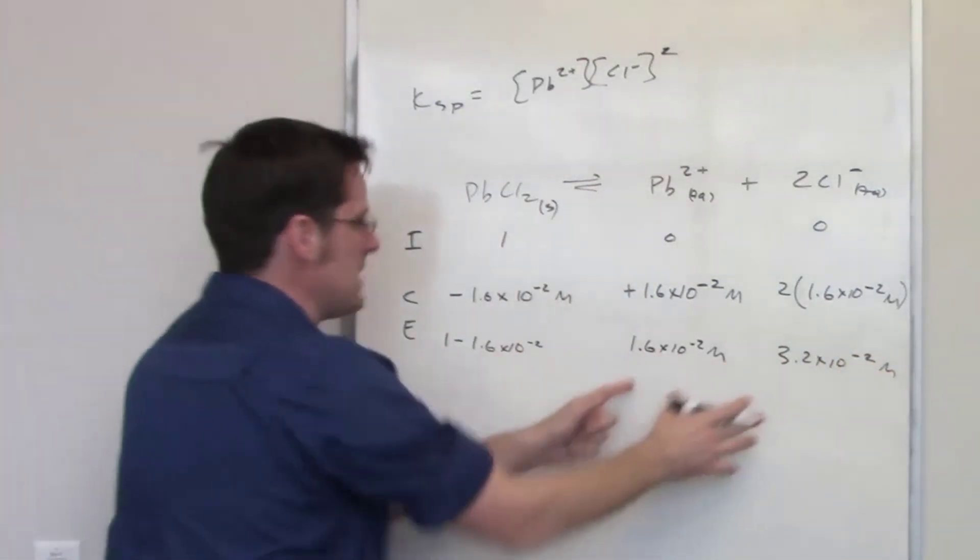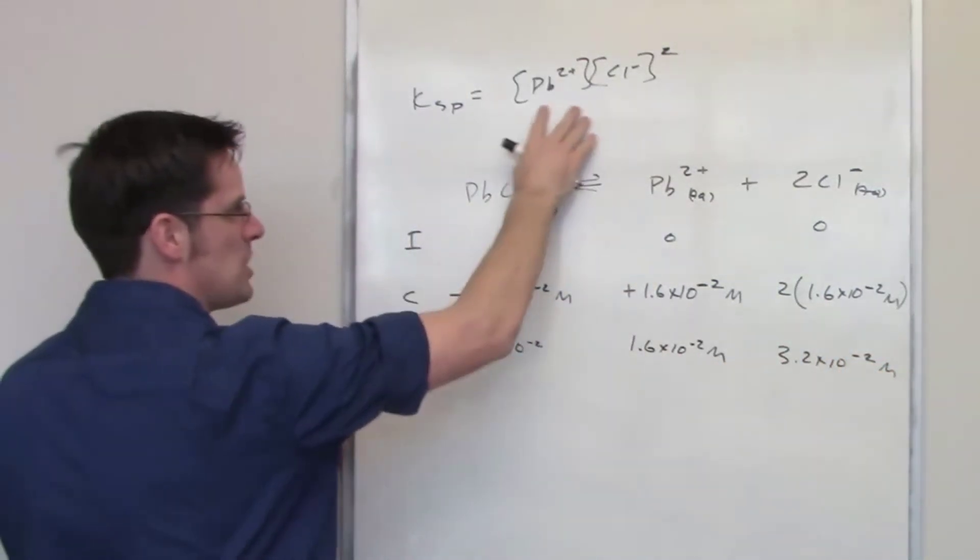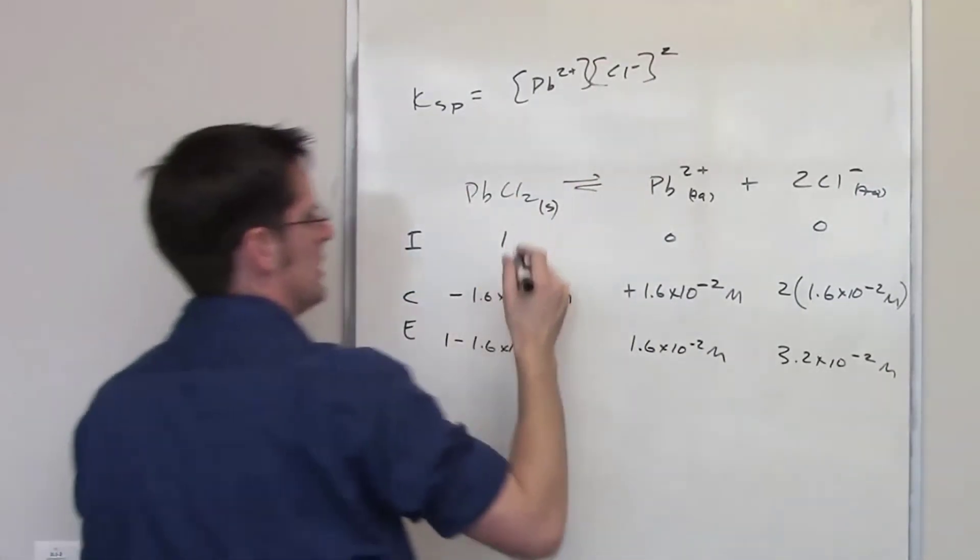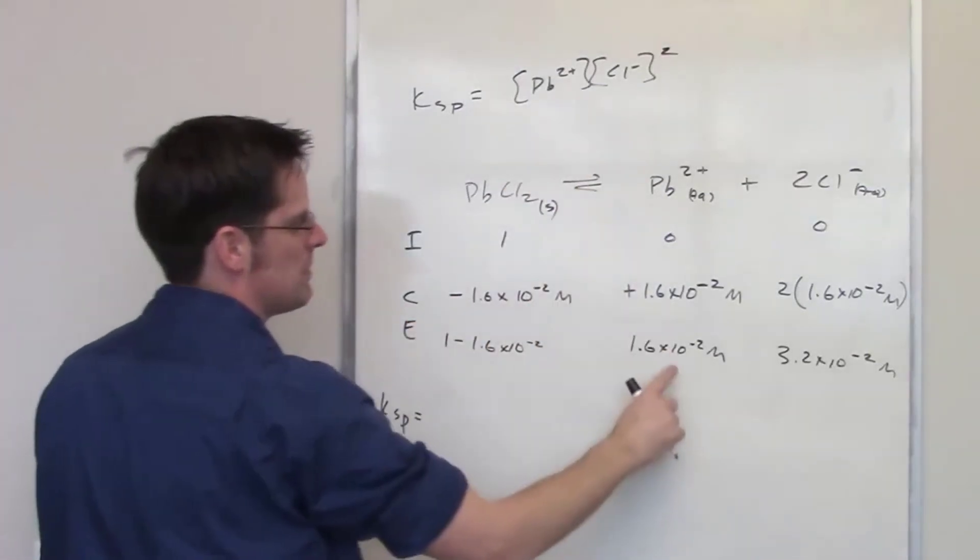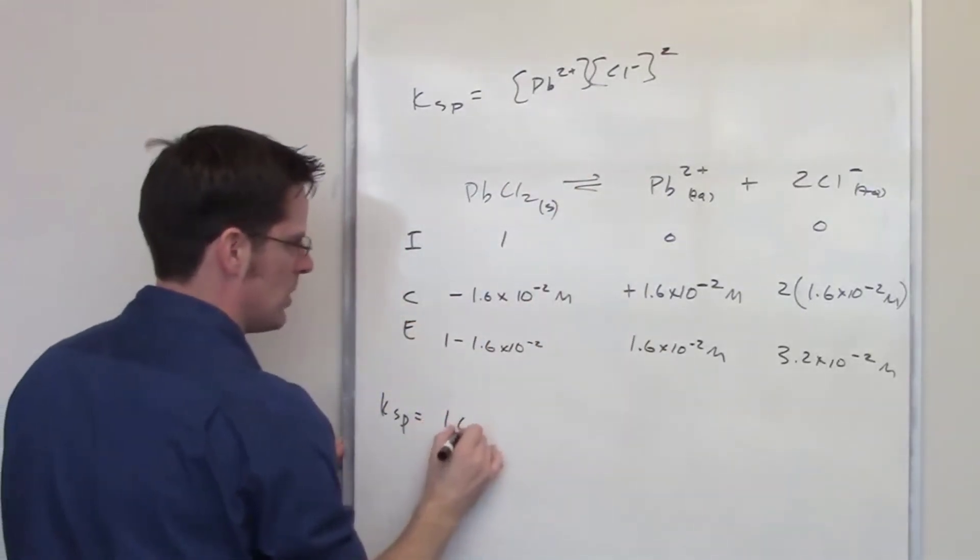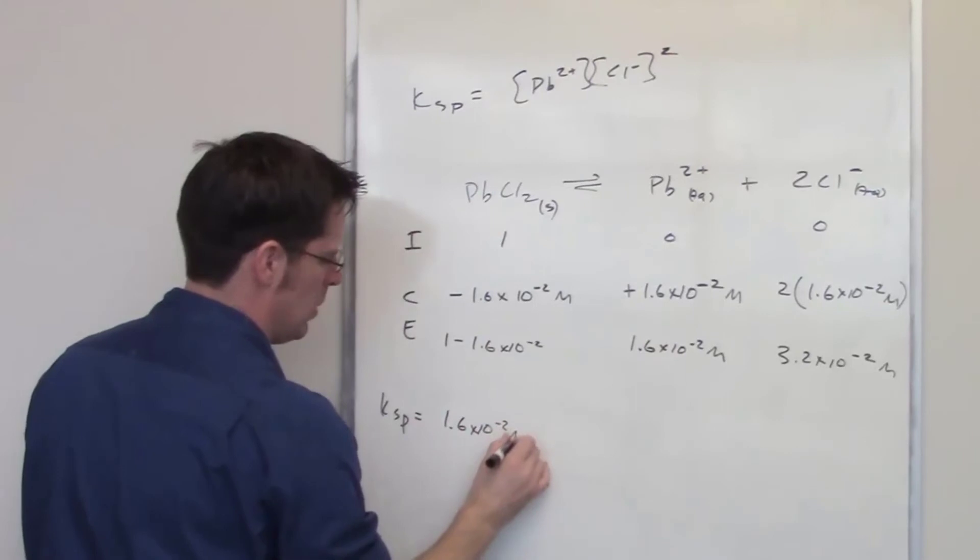Now I take each of these values and put them up into this expression and then solve for it. So Ksp, once again, it's going to be equal to the concentration at equilibrium of lead 2+, which is 1.6 times 10 to the negative 2 molar.